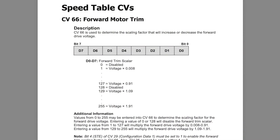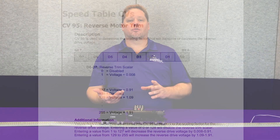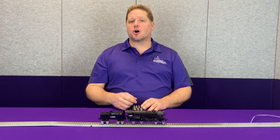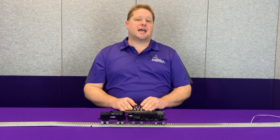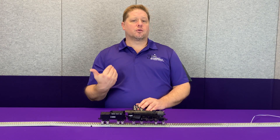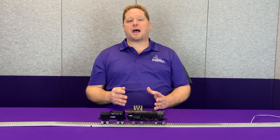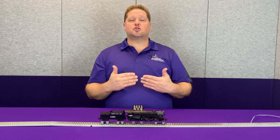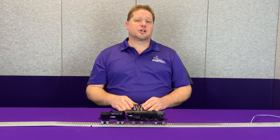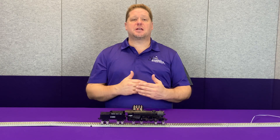Now the other two CVs we talked about — CV66 and CV95 — are what are called the forward and reverse trim respectively. These CVs are initially there to help compensate for different changes in the way the motor turns the model in forward or reverse. For example, our diesels and especially our steam locomotives tend to run forward a whole lot more often than they run backwards, so the gears may be more broken in that direction and the motor turns more efficiently. When you go in reverse it may not be quite as efficient. So this allows you to slightly increase the power to one direction or the other so that you get a predictable, even response regardless of direction.